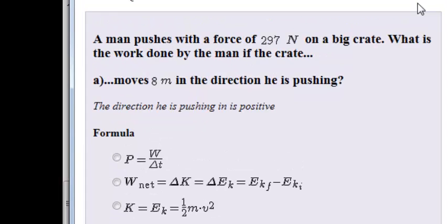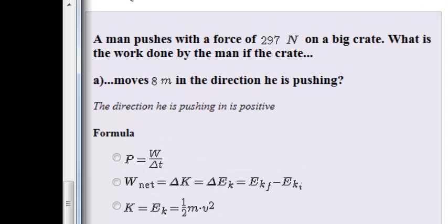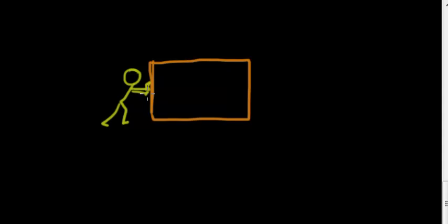Let's draw a big crate. So here is a large crate, and here we have a man pushing on this crate, and he is pushing it, and it is moving 8 meters in that direction, and the force he is applying is 297 newtons. That's not a very large force. It must not be a very large crate, or there might not be a lot of friction.